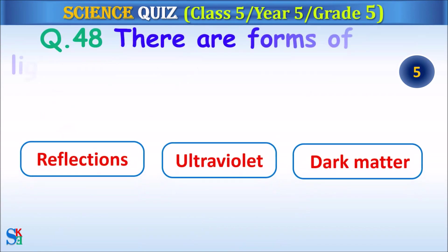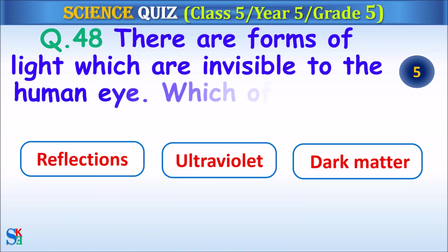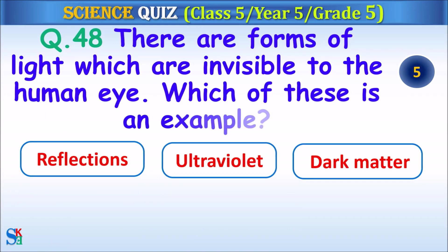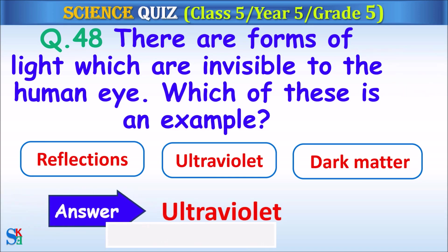Question 48: There are forms of light which are invisible to the human eye. Which of these is an example? Reflections, ultraviolet light or dark matter? The answer is ultraviolet light.